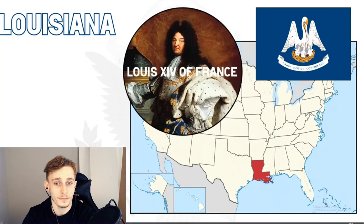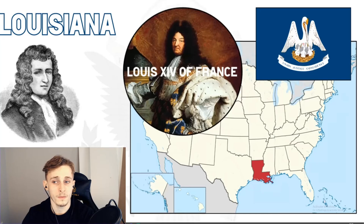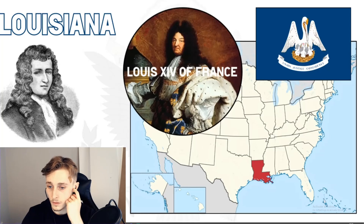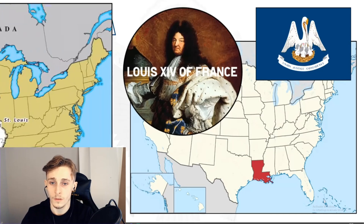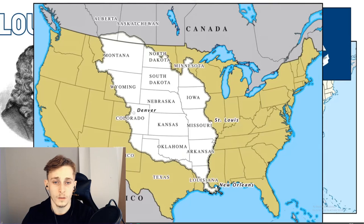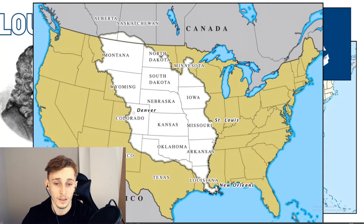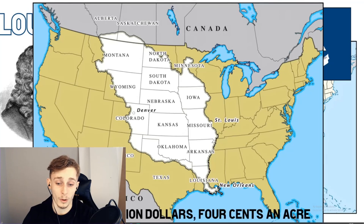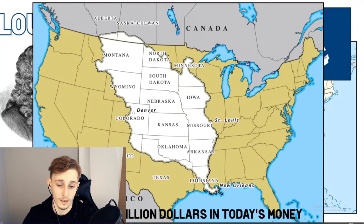Louisiana is very straightforward — it was named after Louis XIV, King of France from 1643 to 1715. When René-Robert Cavelier claimed the territory for France, he named it 'La Louisiane,' roughly meaning 'related to Louis' or 'land of Louis.' The Louisiana Territory once stretched from the Atlantic coast in the south to just north of the present-day Canada border.